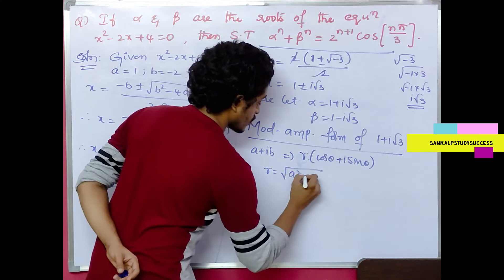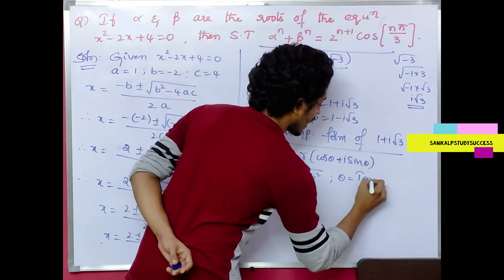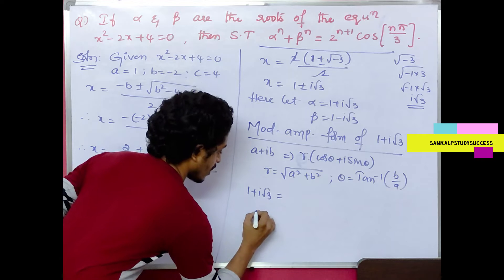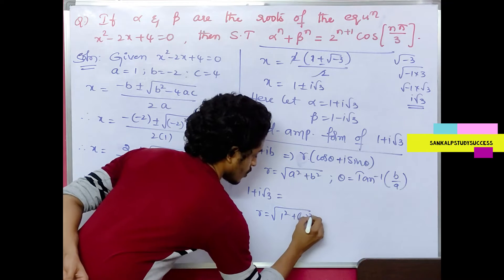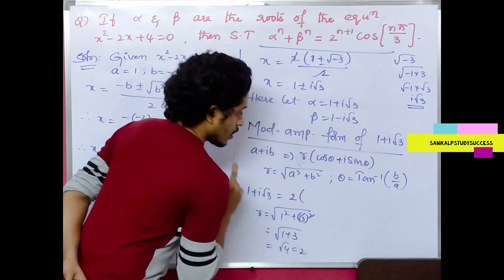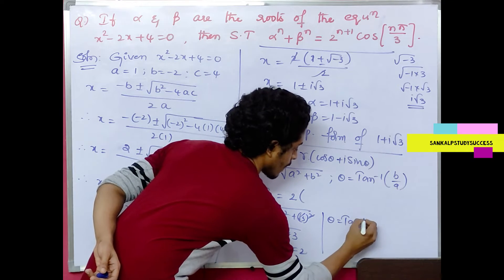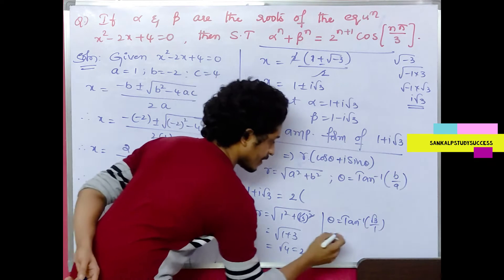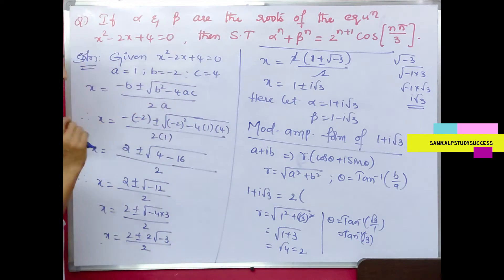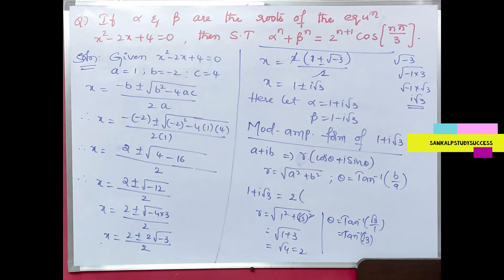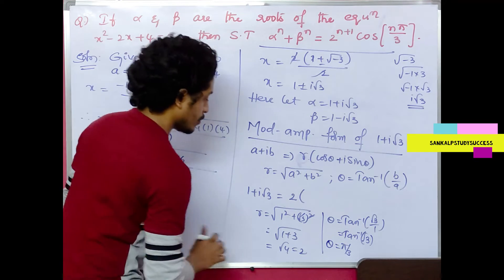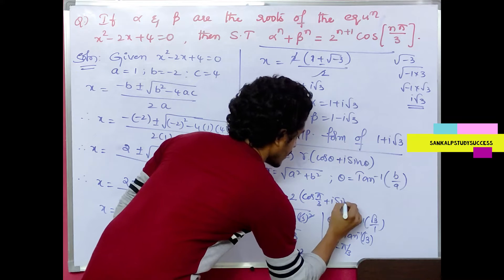For 1 + i√3: r = √(1² + (√3)²) = √(1 + 3) = √4 = 2. And θ = tan⁻¹(√3/1) = tan⁻¹(√3). Since tan(60°) = √3, we get θ = 60° = π/3. So θ = π/3, giving us 2(cos(π/3) + i sin(π/3)).